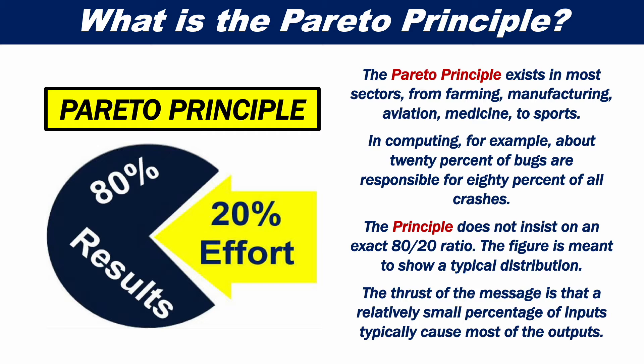The principle does not insist on an exact 80-20 ratio. The figure is meant to show a typical distribution. The thrust of the message is that a relatively small percentage of inputs typically cause most of the outputs.